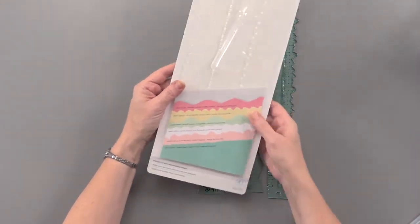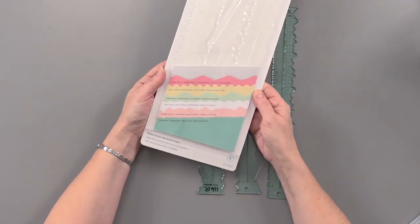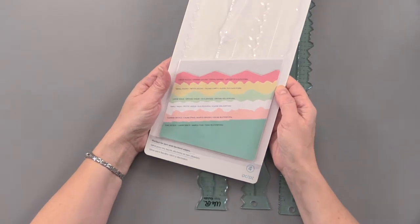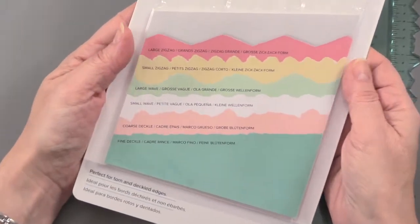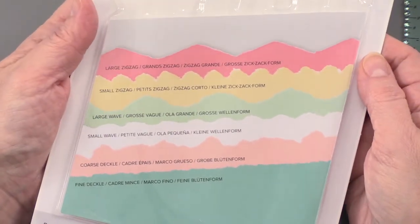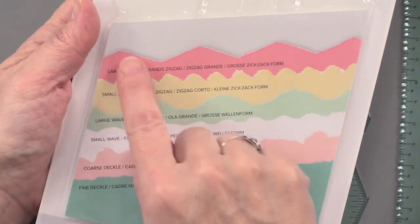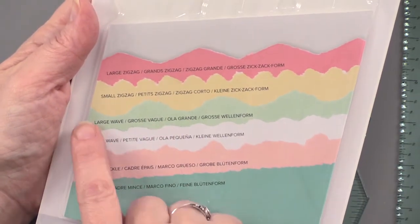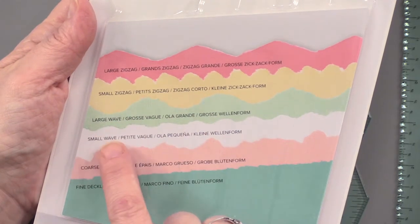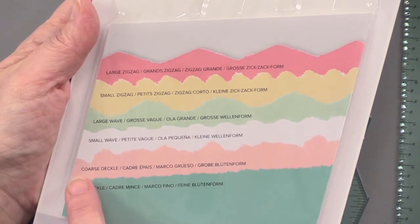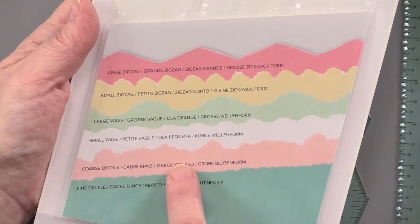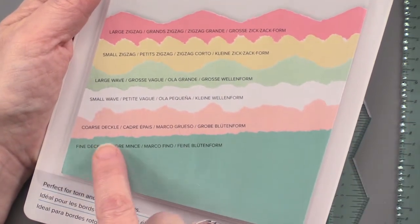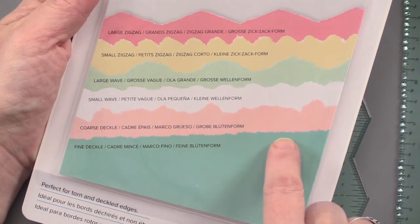Let me show you a close-up of the different edges you can create with these tear guides. You have a large zigzag edge, a small zigzag, a large wave, a small wave, a coarse deckle that sort of changes in design and looks nicely torn, and then a fine deckle that's really along a straight edge.